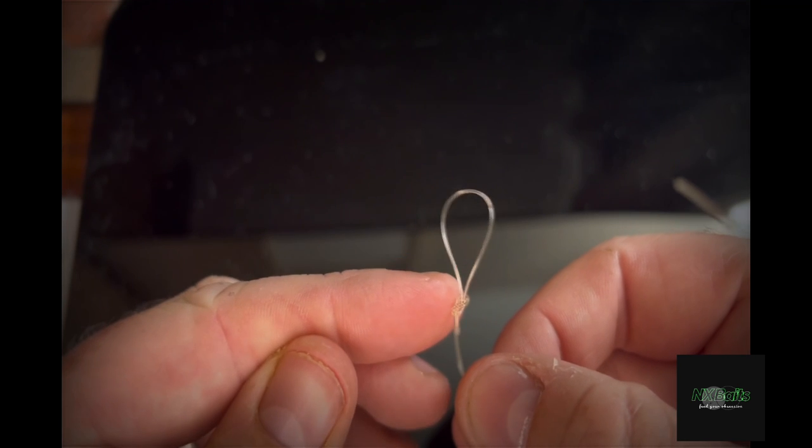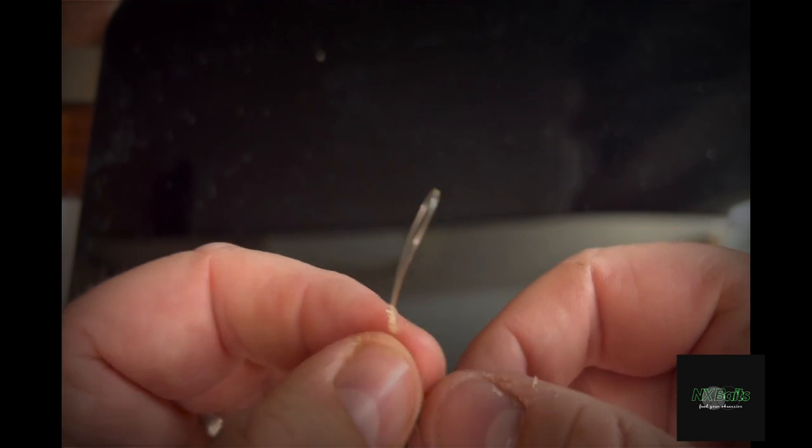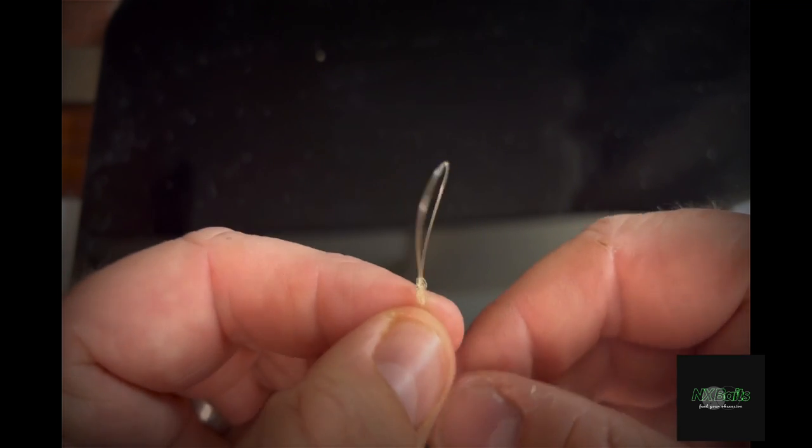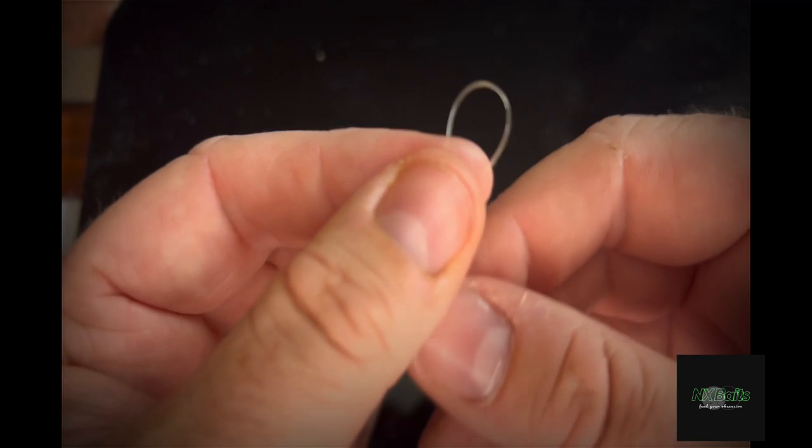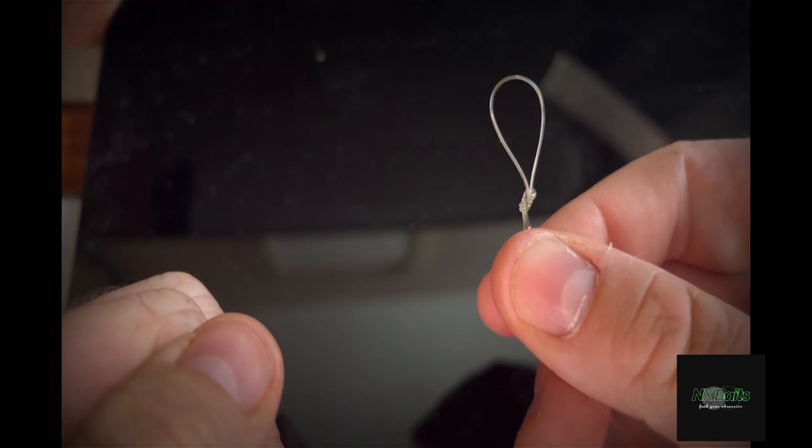And then what we can see here straight away, this is the initial figure of eight loop. You see it's curving down here, big old loop, and just it doesn't in my mind sit particularly straight. So that's the normal figure of eight loop.